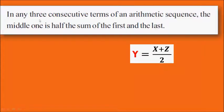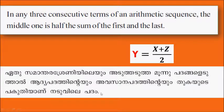In any three consecutive terms of an arithmetic sequence, the middle one is half the sum of the first and last. This is the algebraic equation for arithmetic sequences.